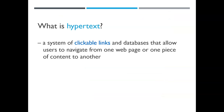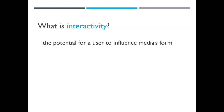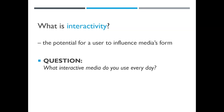Hypertext is a system of clickable links and databases that let users navigate from one web page or piece of content to another. Think about what using the internet without hypertext would be like. Interactivity is the potential for a user to influence the form of media — manipulating sizes, colors, shapes, layouts, speeds, and all sorts of things. A question for you to consider: what interactive media do you use every day?